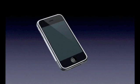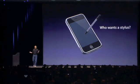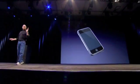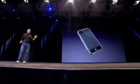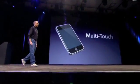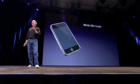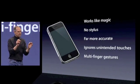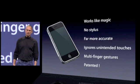A giant screen. How are we going to communicate with it? We don't want to carry around a mouse. A stylus? No. Who wants a stylus? You have to get them and put them away, and you lose them. Yuck. Nobody wants a stylus. We're going to use the best pointing device in the world — a pointing device we're all born with. We're born with 10 of them. We're going to use our fingers. We're going to touch this with our fingers. And we have invented a new technology called multi-touch, which is phenomenal. It works like magic. You don't need a stylus. It's far more accurate than any touch display that's ever been shipped. It ignores unintended touches — it's super smart. You can do multi-finger gestures on it. And boy, have we patented it.